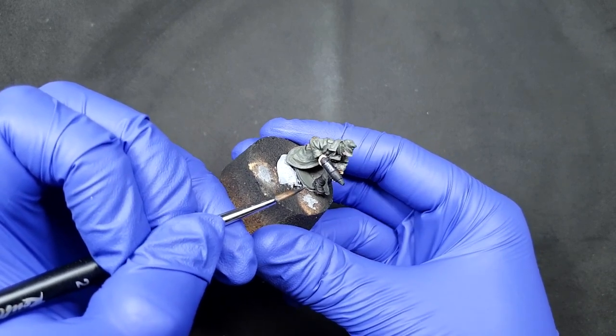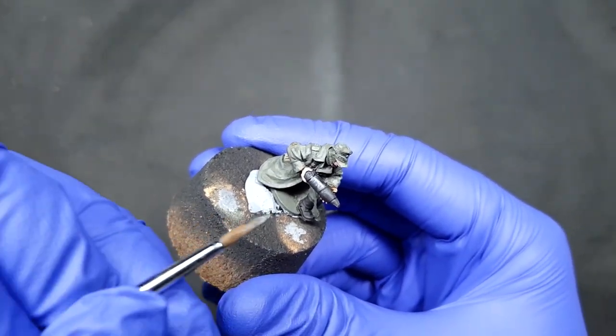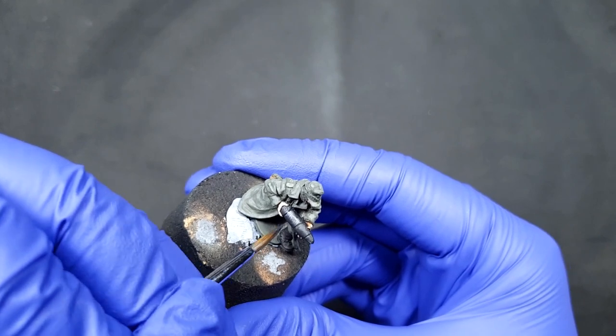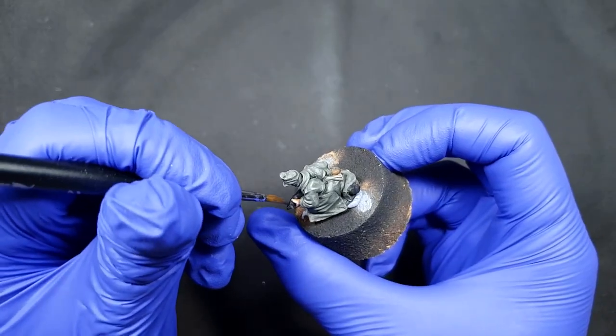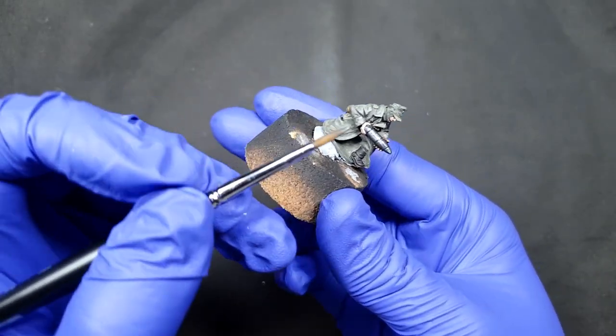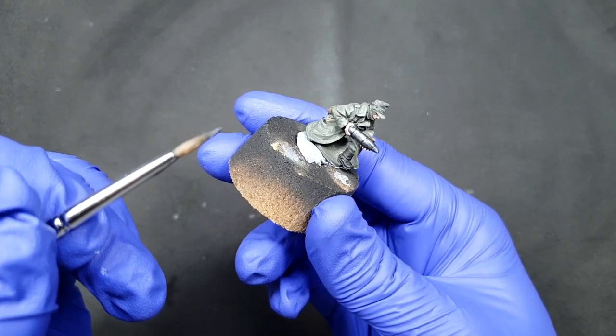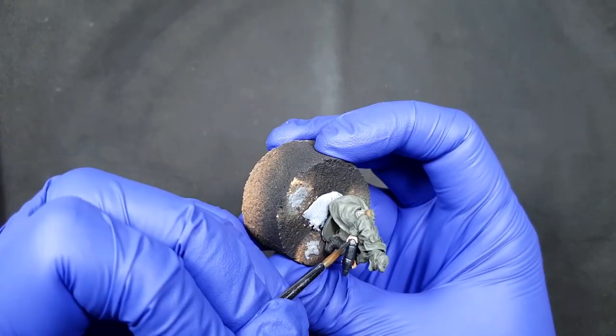A great way to obtain the ideal color is to add metal medium gradually, little by little. Remember that this product does not replace dilution. You will still need to add a bit of water or thinner to the mixture.